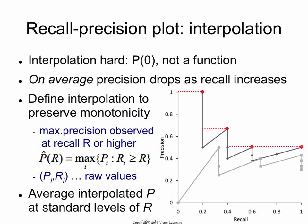So you take that value — two-thirds — and use it for the entire range: precision at 0.2, 0.25, 0.3, all the way up to 0.4, and so on. This is an optimistic interpolation. What you're doing is taking a piecewise-constant blanket and throwing it on top of the recall-precision curve, giving an upper bound on the original values. This has been agreed as the standard way to interpolate.